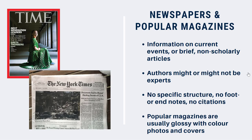Newspapers are pretty easy to recognize — they're printed on large folded sheets of newsprint, usually in black and white. You can tell the difference between scholarly journals and popular magazines by their appearance. Popular magazines are usually glossy, with color photos and covers, and lots of advertising.